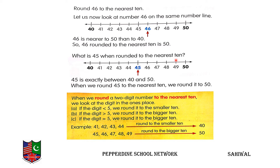What is 45 when rounded to the nearest 10? Between 40 and 50 there are 10 numbers. From 45 going to 40 is 5 numbers, and from 45 going to 50 is also 5 numbers — exactly equal. When the digit in the ones place is equal to 5, we round it to the bigger 10. So we round 45 up to 50. 45 is exactly between 40 and 50, and when we round 45 to the nearest 10, we round it to 50.